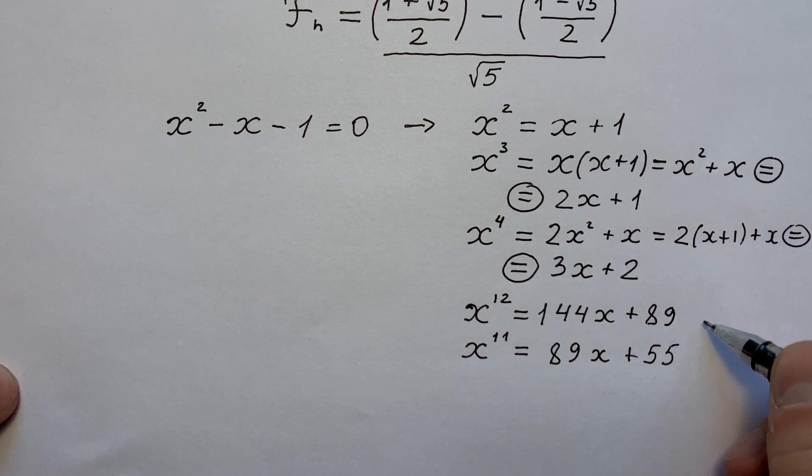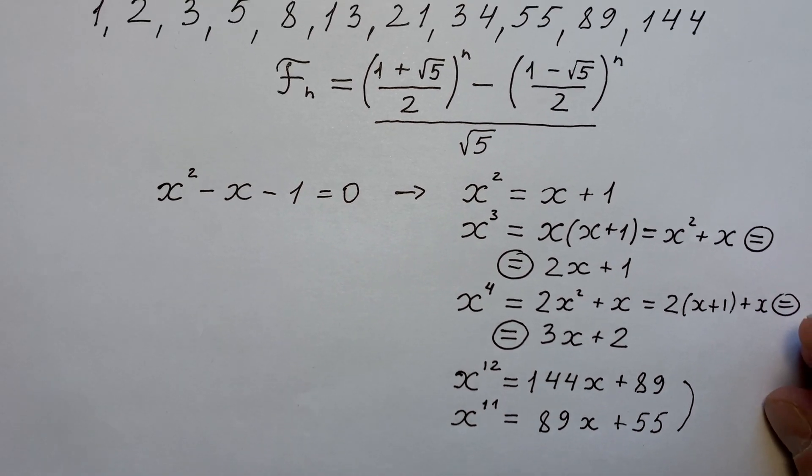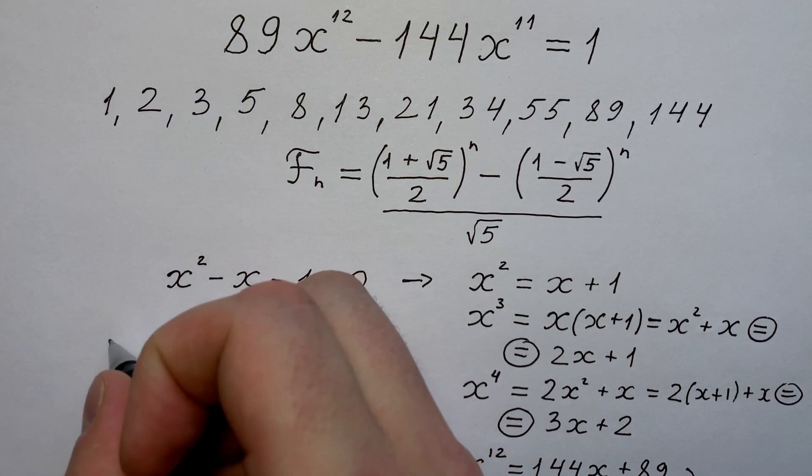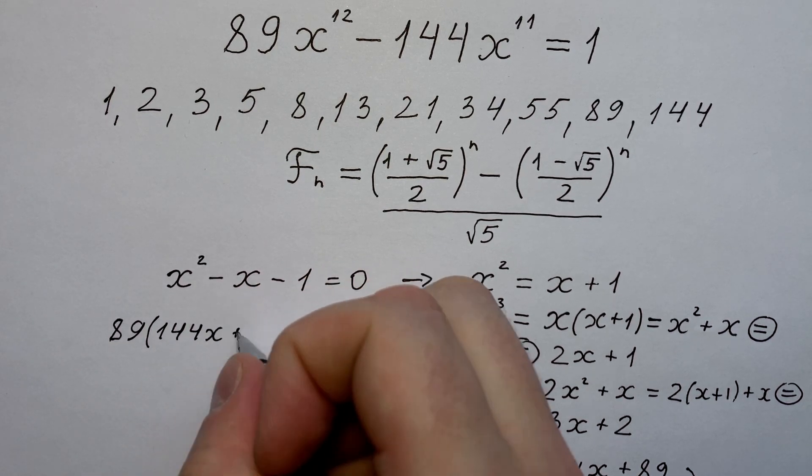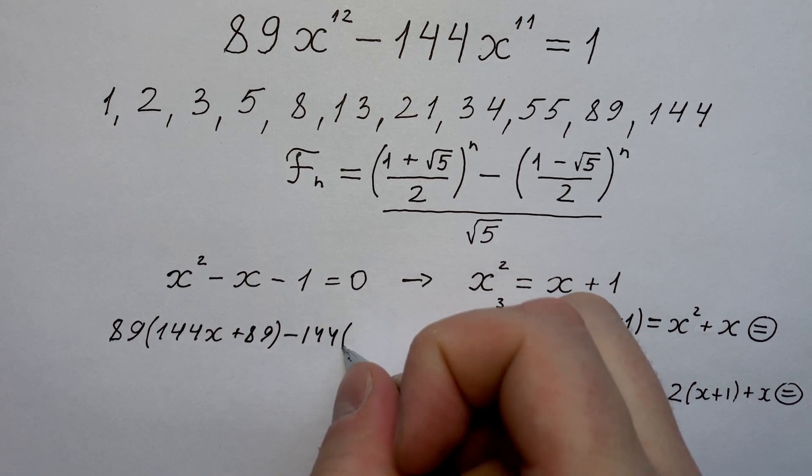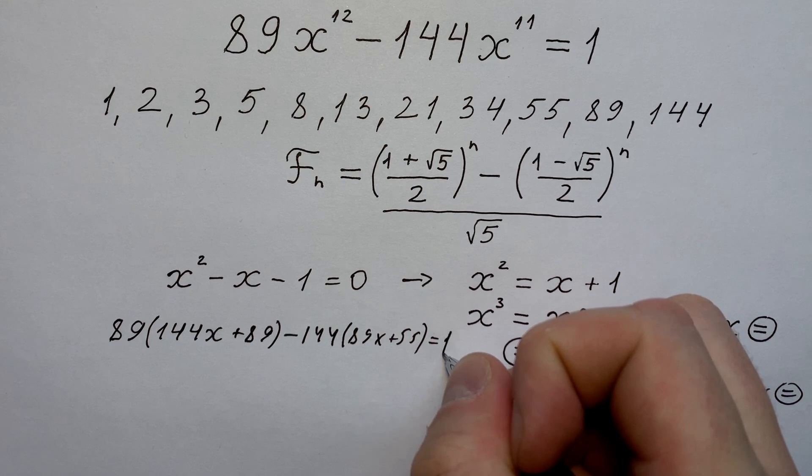Now we see, guys, that if we put these two equations into the original one, we're going to have 89 times (144x plus 89) minus 144 times (89x plus 55), and it equals 1.